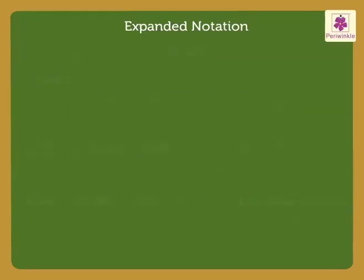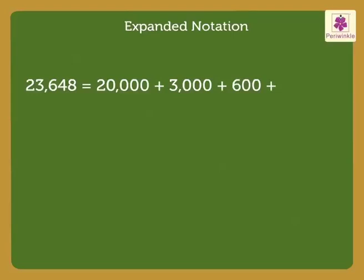Now let us try some more examples. Look at the number 23,648. We write the number in expanded notation as 20,000 plus 3,000 plus 600 plus 40 plus 8.